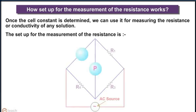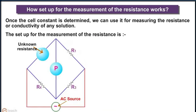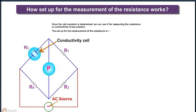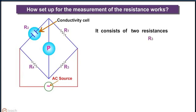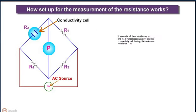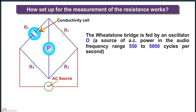The setup for the measurement of resistance is shown in the given diagram, which is a setup for the Wheatstone bridge circuit. It consists of two resistances R3 and R4, a variable resistance R1, and the conductivity cell having the unknown resistance R2. The Wheatstone bridge is fed by an oscillator O, which is a source of AC power in the audio frequency range of 550 to 5000 cycles per second.